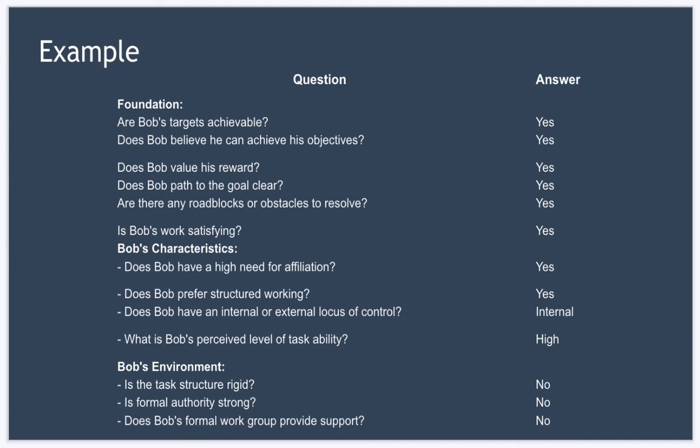So from this we can say as Bob's manager to try and take a two-fold approach to boost his motivation. So firstly, you could decide to use a directive leadership style with Bob to provide him with the structure that he craves. And secondly, you could choose to take something of a supportive leadership style to coach Bob through the roadblocks he's facing. And by doing this, you'll help meet his need for affiliation. So as you can see, we're using the model to work out how best to motivate Bob to achieve his goals.